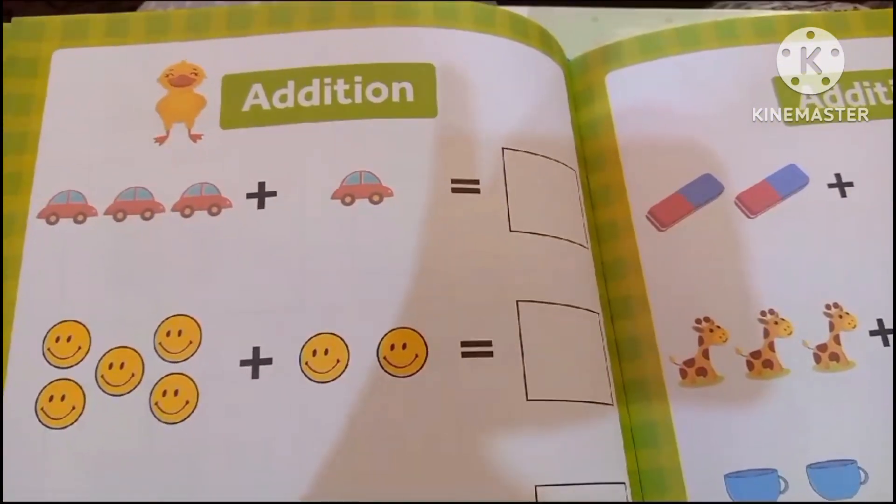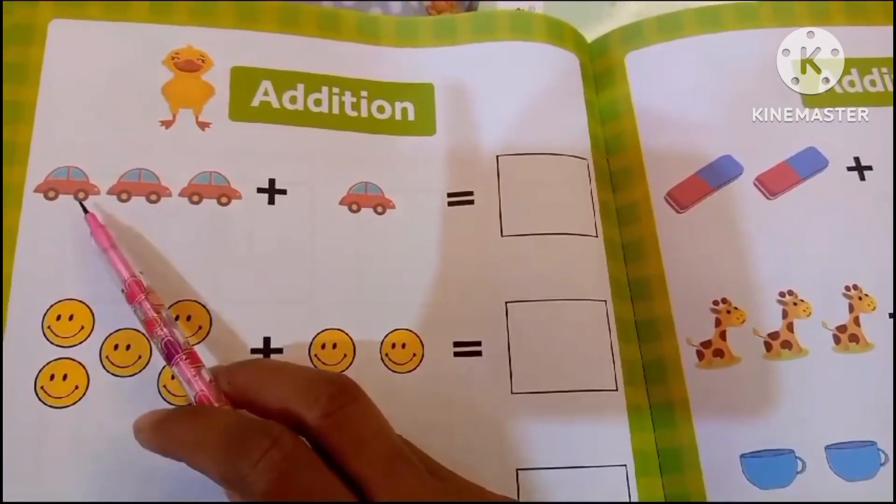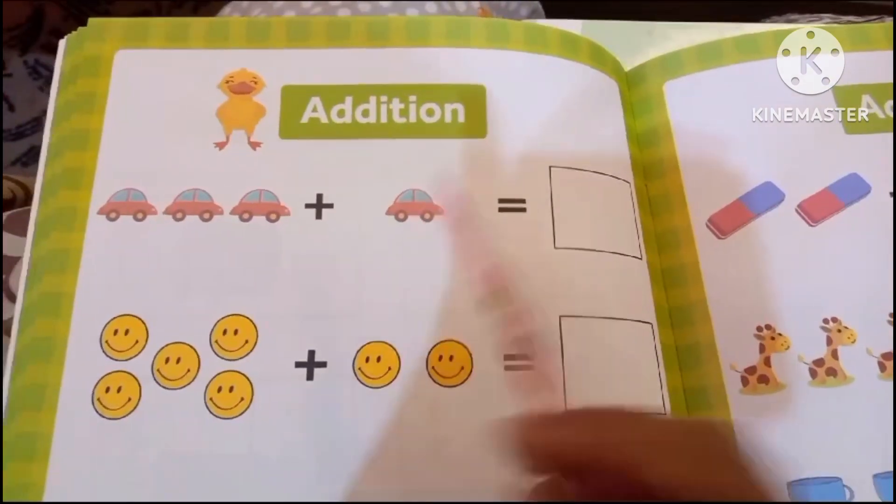Today we are going to learn about addition. How many cars are there? These are 1, 2, 3 plus 1... 1, 2, 3, 4.